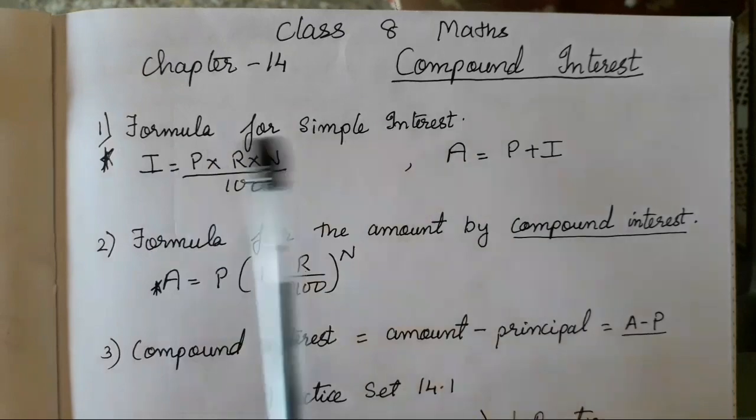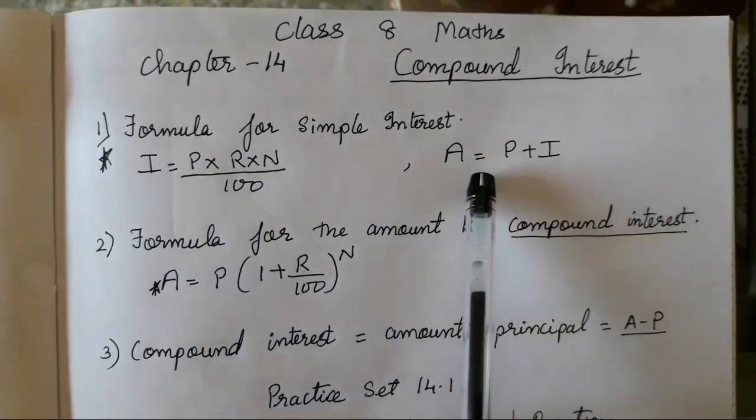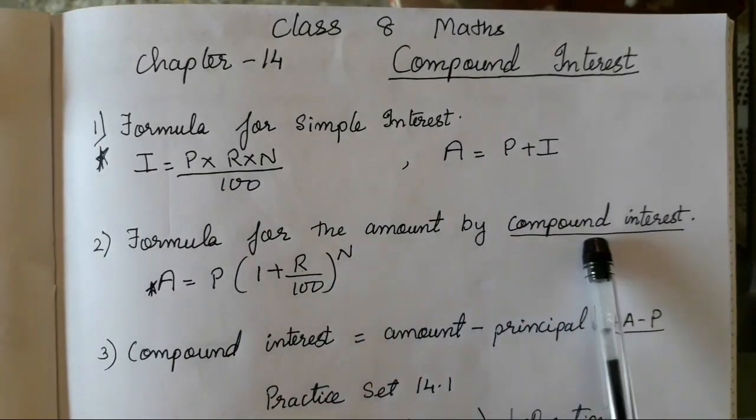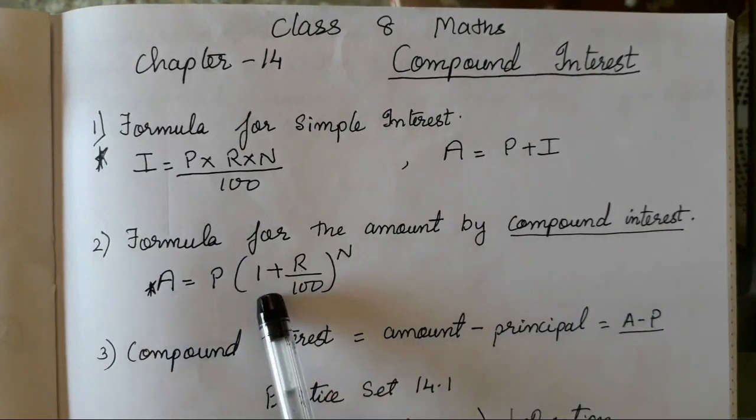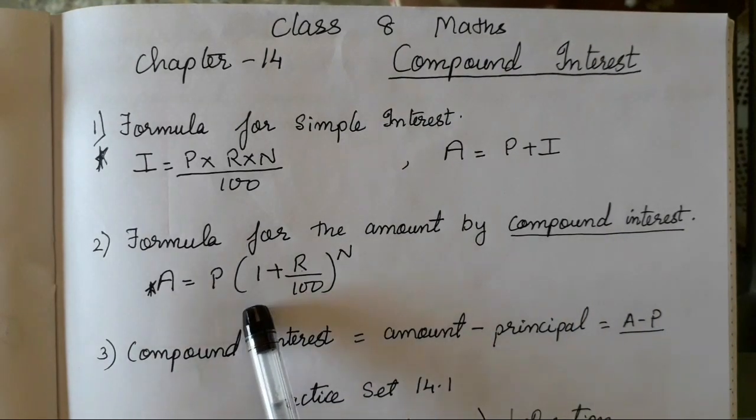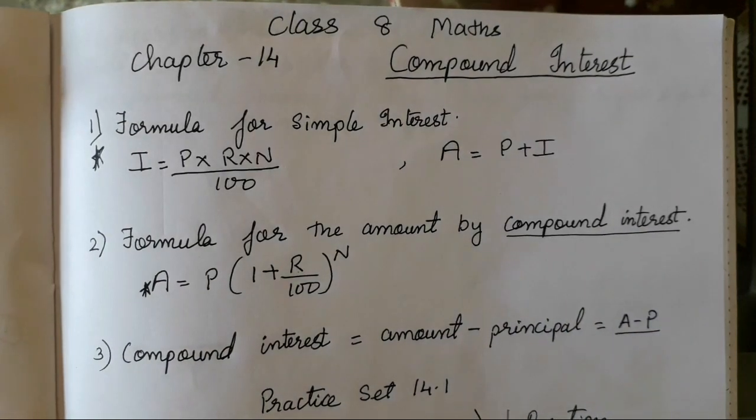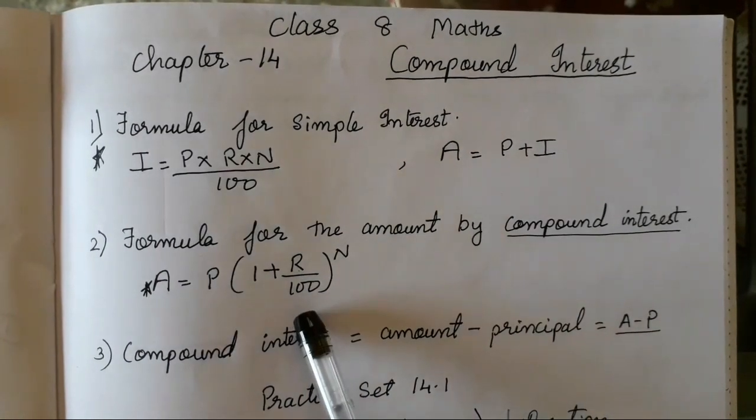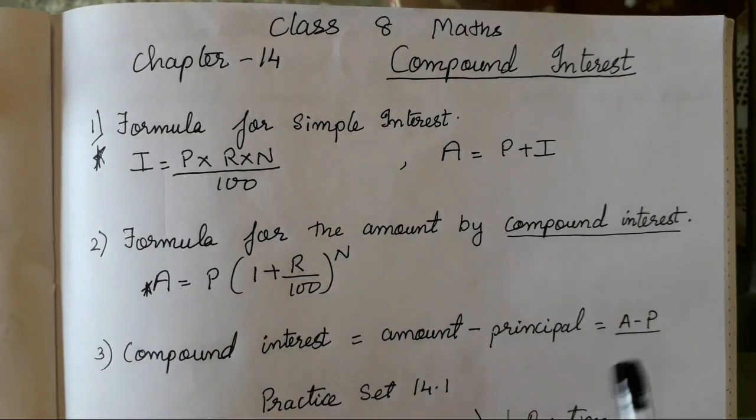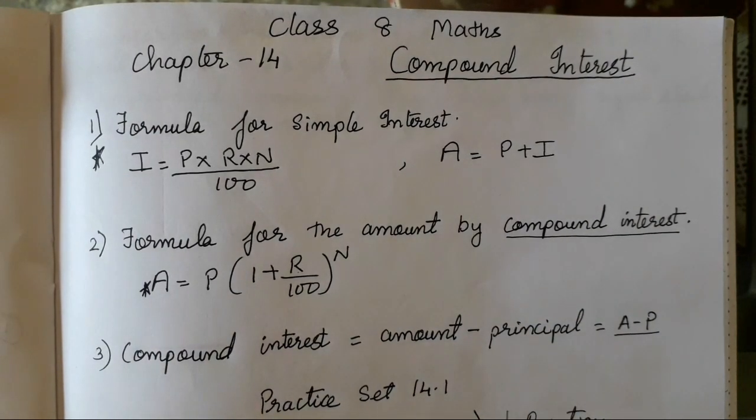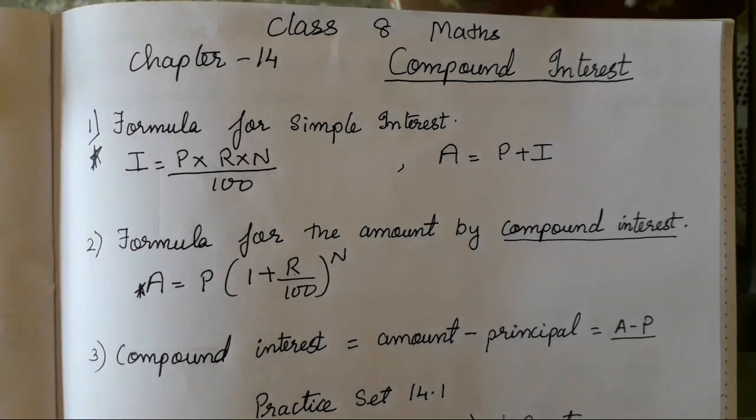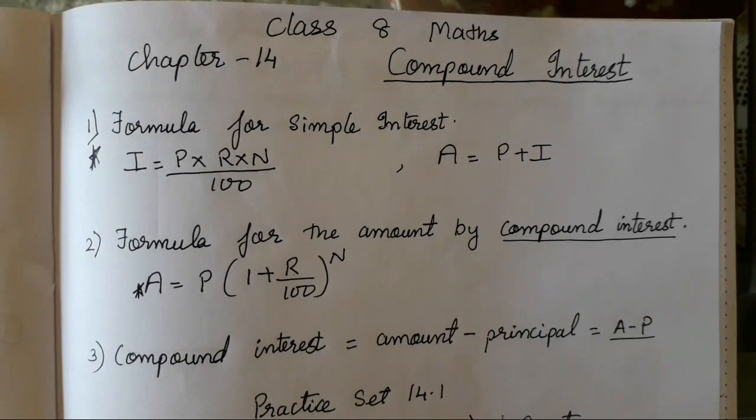First again we will revise the formulas. Formula for simple interest is I = P×R×N/100, A = P+I. Formula for the amount by compound interest is A = P(1+R/100)^N. When we get the amount, we have to use it to find the compound interest. I hope these formulas are clear to you all. I have given few examples from the textbook, 14.1 examples are being solved, you can check the description box. Let's start with question number 2.